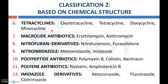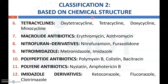Macrolide antibiotics like erythromycin and azithromycin. Nitrofuran derivatives like nitrofurantoin and furazolidone. Nitroimidazoles like metronidazole and imidazole. Polypeptide antibiotics like polymyxin B, colistin, and bacitracin. Polyene antibiotics like nystatin and amphotericin B. Imidazole derivatives like ketoconazole, fluconazole, and clotrimazole. That is the second classification based on chemical structure.